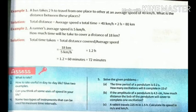Now second example: a runner's average speed is given, that is 5 km per hour. How much time will it take to cover a distance of 18 km? So now we have to find time. Time equals distance divided by speed. 18 km divided by 5 equals 1.2 hours. Now if you have to convert this 1.2 hours to minutes, as you know 1 hour equals 60 minutes, so we multiply 1.2 hours by 60 and we get 72 minutes. This is your answer for example 2.